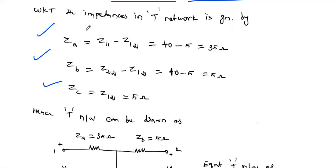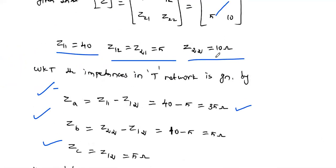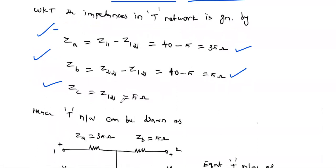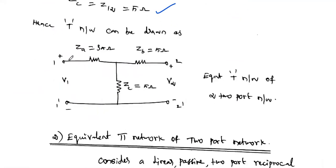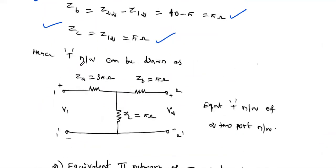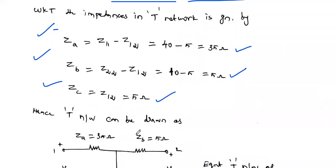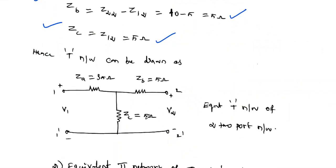Using the formulas: ZA = Z11 − Z12 = 40 − 5 = 35 ohms. ZB = Z22 − Z12 = 10 − 5 = 5 ohms. ZC = Z12 = 5 ohms. So we have calculated the T network elements. Draw the T network and replace the values: ZA = 35 ohms, ZB = 5 ohms, ZC = 5 ohms. This is the procedure to find circuit elements when the Z-parameter is given.